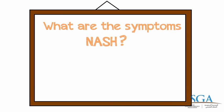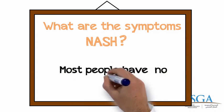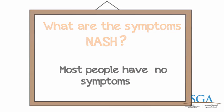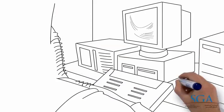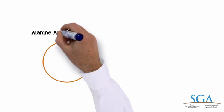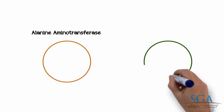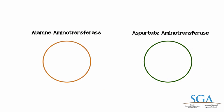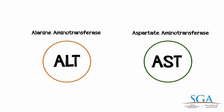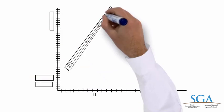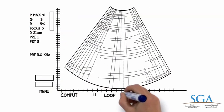What are the symptoms of NASH? Most people with NASH have no symptoms. Your doctor might suspect that you have NASH from the results of your routine blood tests. NAFLD is often detected when imaging tests of the abdomen are obtained for other reasons. Liver blood tests are either normal or there may be slight increases in two of the enzymes made by the liver: the serum ALT, alanine aminotransferase, and/or the serum AST, aspartate aminotransferase.